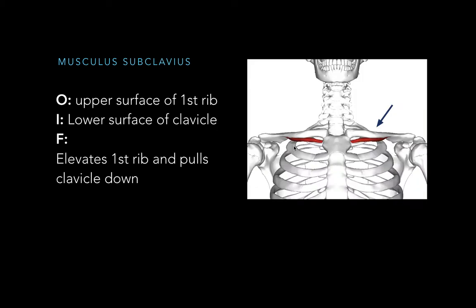The next one is musculus subclavicularis. It is located underneath the clavicula. It originates at the upper surface of the first rib and inserts at the lower surface of the clavicula. The function of this is to elevate the first rib and pull the clavicula down. It also holds the clavicula and the first rib together.